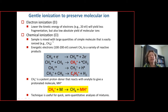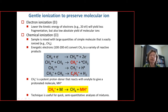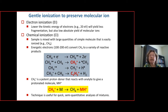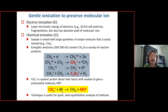In chemical ionization, the sample is mixed with a large amount of a simple, easily ionized molecule such as methane. Methane is bombarded with electrons to generate CH₄⁺•, a reactive species. From this, CH₅⁺ and C₂H₅⁺ are formed — both excellent proton donors. Most analytes will accept a proton from CH₅⁺.